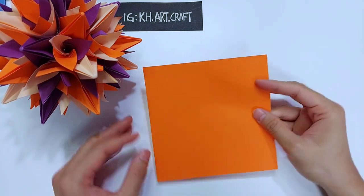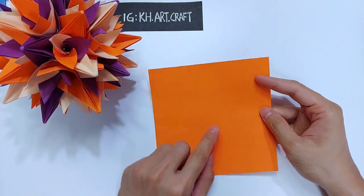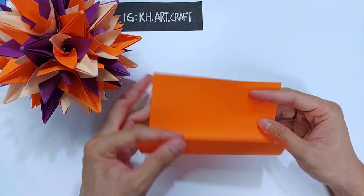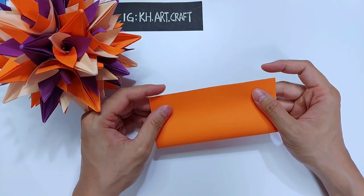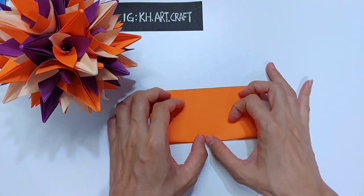We start off with a square sheet. The first step is to fold a square base by making horizontal folds.